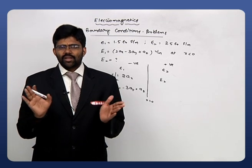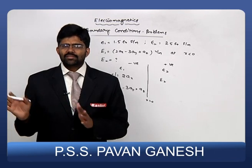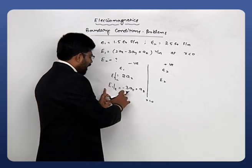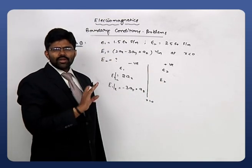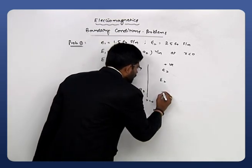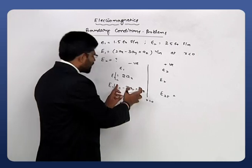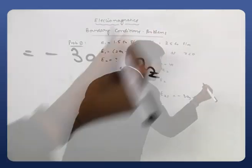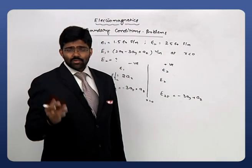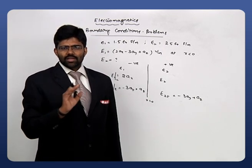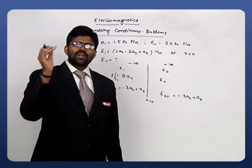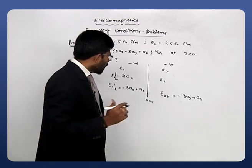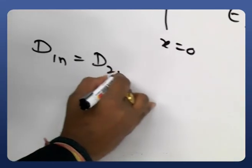Applying boundary conditions for electric field: the tangential component is always continuous — there is no change across the boundary. So E₂t = E₁t = −3ay + az. The normal component is discontinuous, so we use the condition for electric flux density: D₁n = D₂n.